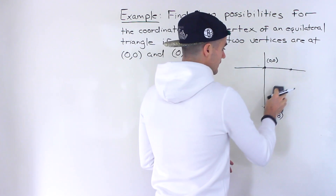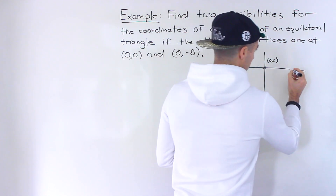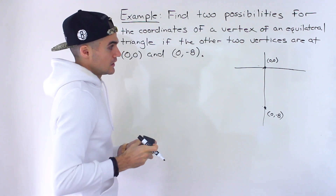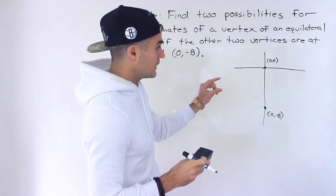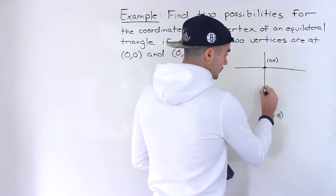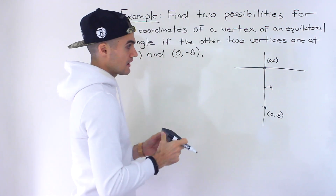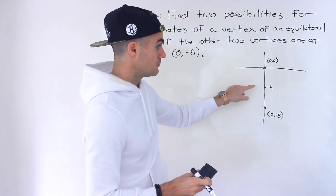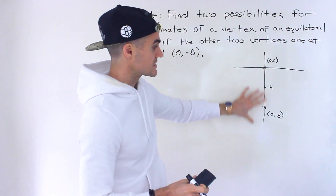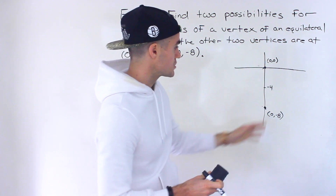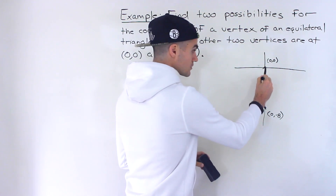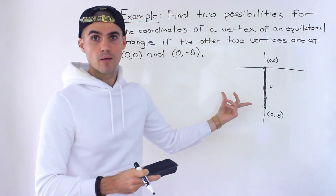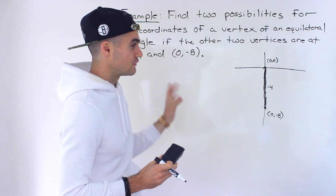Now in this particular case, if you think about it, in order for it to be an equilateral triangle — meaning all the sides have the same length — notice how the third point is actually going to have to have a y value of negative four. It's going to have a y value between zero and negative eight, the midpoint between them, so that's going to be negative four. This is a special case here because the x values are the same, so this side of the equilateral triangle is actually just going to be a vertical line. If it wasn't, if it was slanted, then this question would actually be more complex.